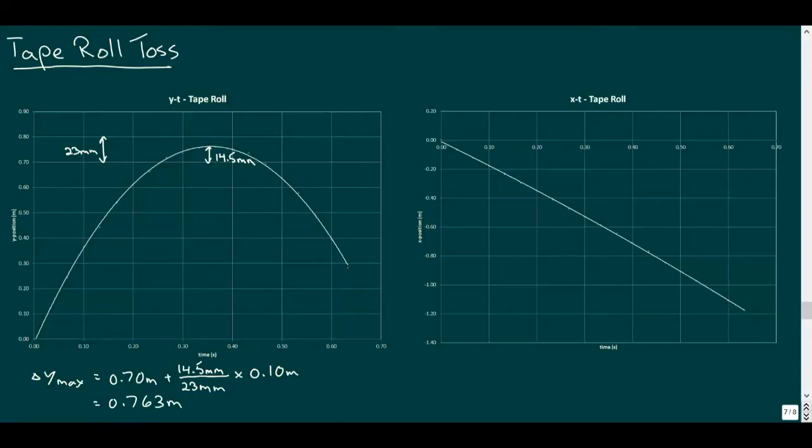And for the time axis, the grid spacing is 45 millimeters, and the peak occurs at a distance of 26 millimeters from the 0.3 second grid line. Using the same calculation strategy as we did with the height, we find the tape reaches the peak of its trajectory 0.358 seconds after launch.